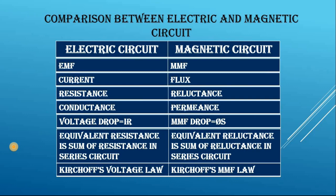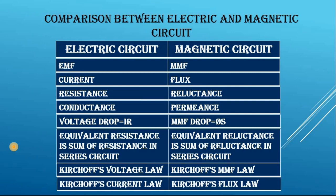In a magnetic circuit we have Kirchhoff's MMF law — the sum of MMF rise is equal to the sum of MMF drop in a closed magnetic circuit. For an electric circuit we have Kirchhoff's current law — the sum of current entering a node is equal to the sum of current leaving the node. In a magnetic circuit we have Kirchhoff's flux law — the sum of flux entering a node is equal to the sum of flux leaving the node.